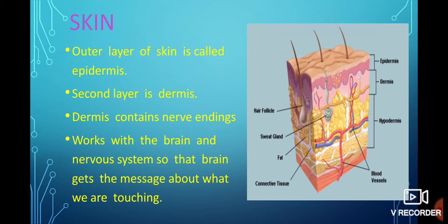And last sense organ which is included in your syllabus is your skin. This is the picture of the different layers of skin. Anatomical layers of skin obviously from outside you cannot see. Outer layer is called epidermis. Second layer comes your dermis. In that dermis region you have nerve endings. Now third portion is also there which is found below dermis which is known as hypodermis. Skin works with the brain and nervous system so that the brain gets the message about what we are touching or who is touching you. So everything has to work with the nervous system.